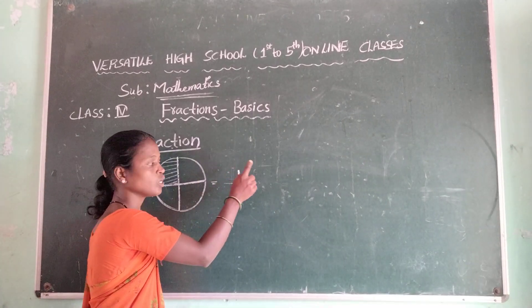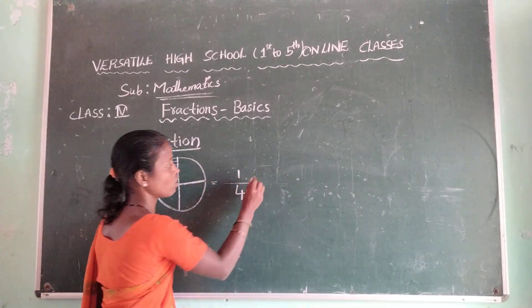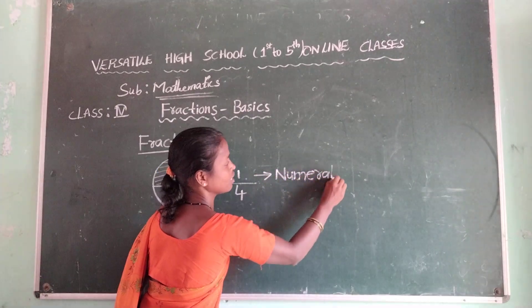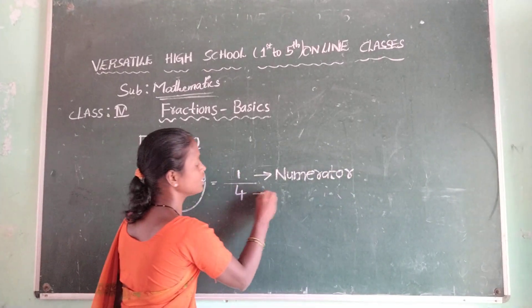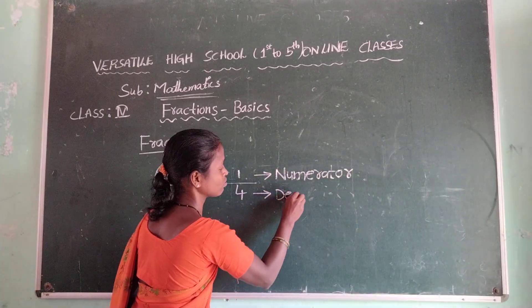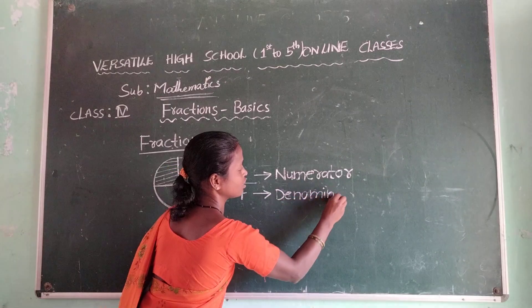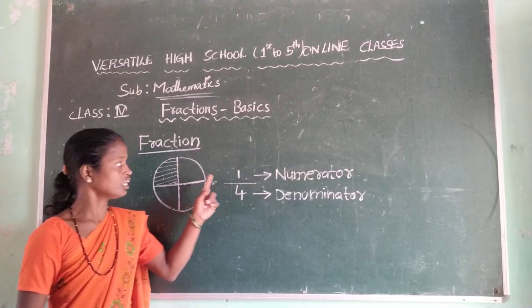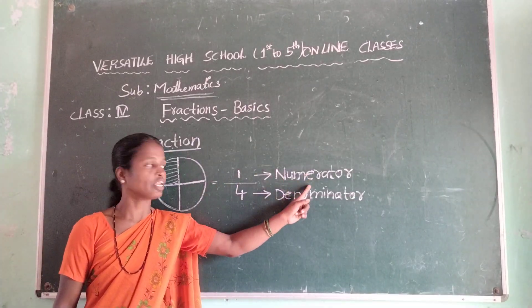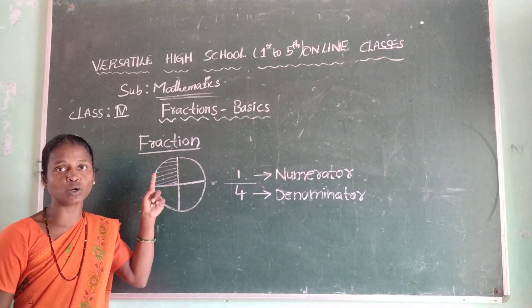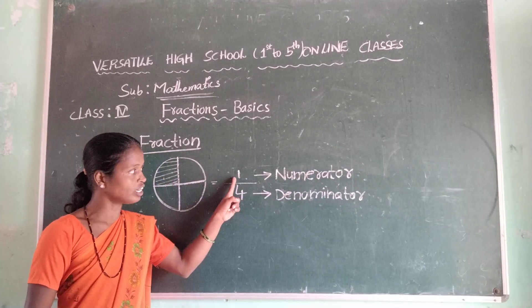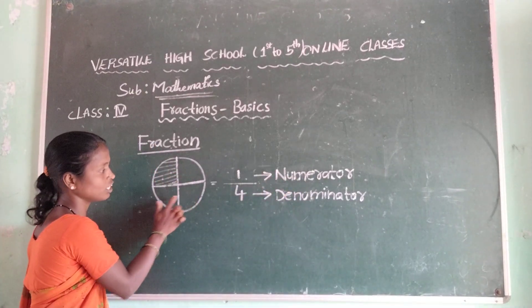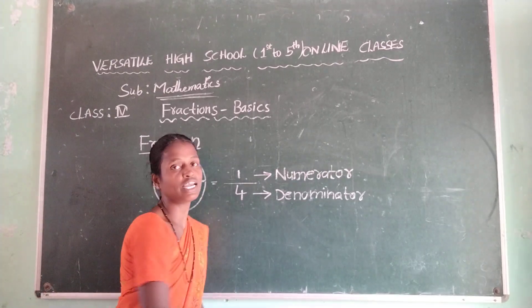So one is called a numerator. And four is called a denominator. Children, listen to me — here one is called a numerator, meaning the shaded parts. How many parts are shaded here? Only one part. So one is the numerator and four is the denominator.